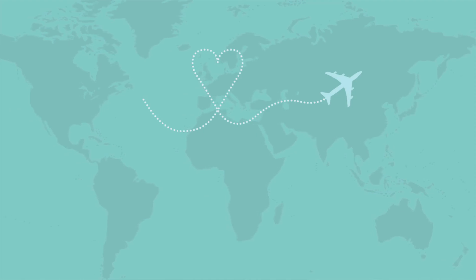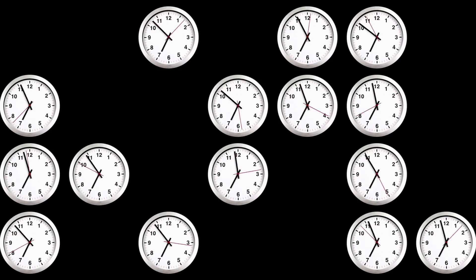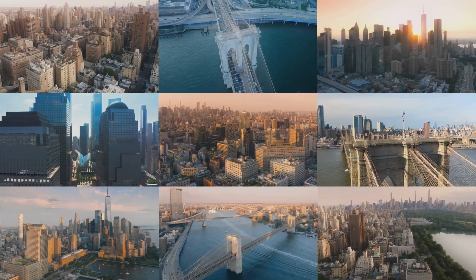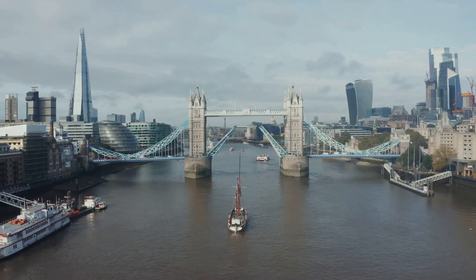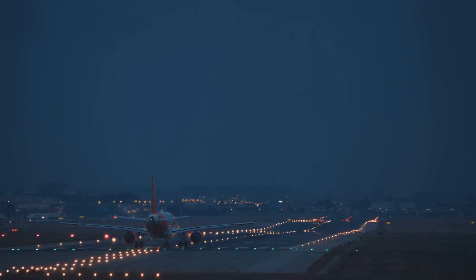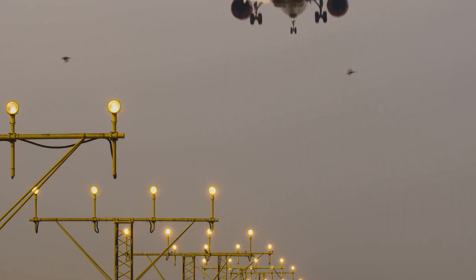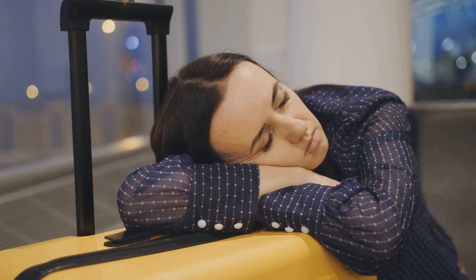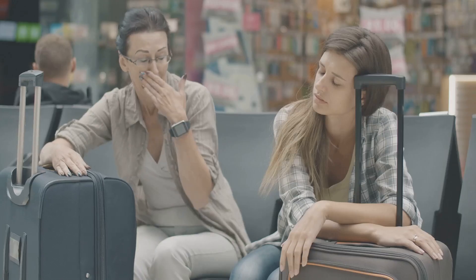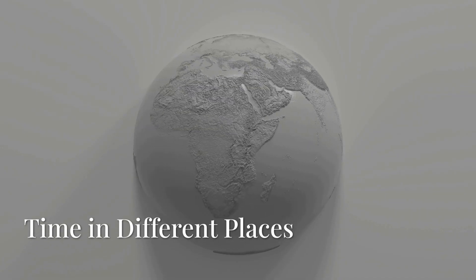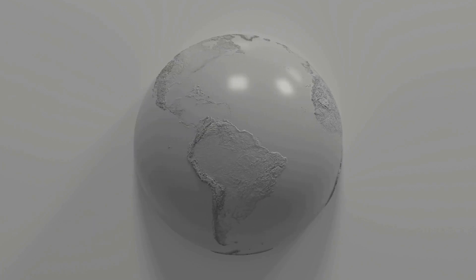Traveling across time zones can be a bit like time traveling, at least in terms of the clock. If you fly from New York City to London — New York City is in the Eastern Time zone while London is in Greenwich Mean Time, which is five hours ahead of ET — departing New York at 8 p.m. ET on a six-hour flight means you arrive in London at 9 a.m. GMT the next day. You gain time when you travel east and lose time when you travel west. This time difference can take some getting used to, especially over long distances — jet lag, anyone?